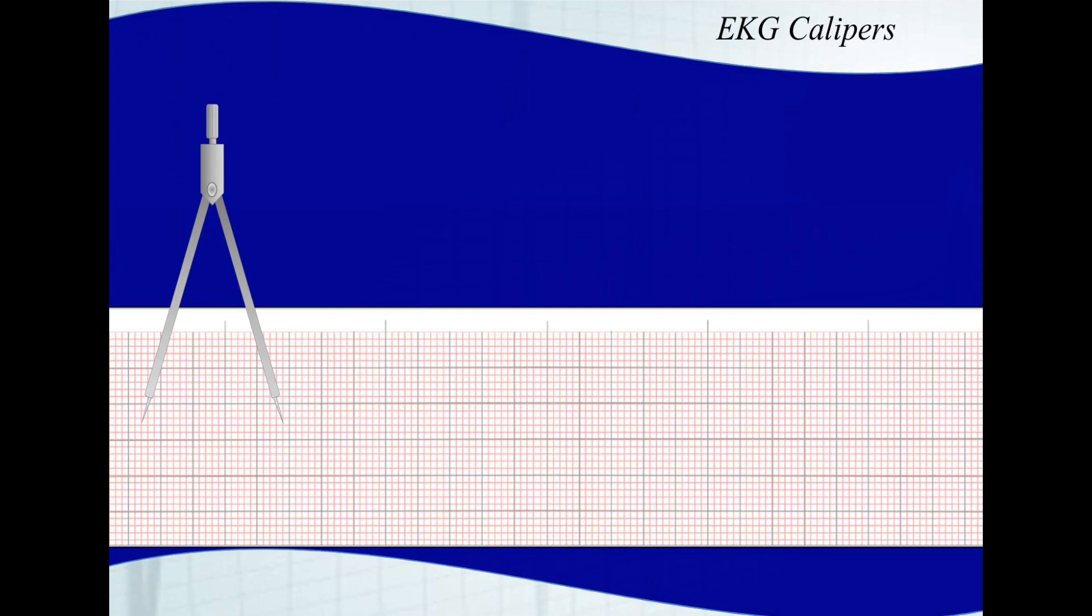We should talk about EKG calipers. I do recommend you get a pair if you're going to be interpreting EKGs. EKG calipers are useful for identifying intervals, regularity, the width of complexes, and several other things.